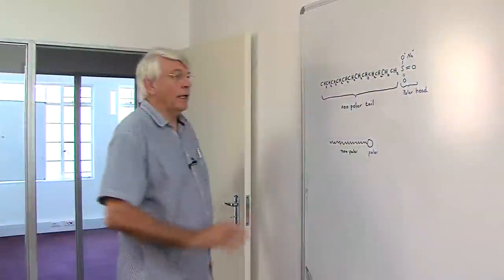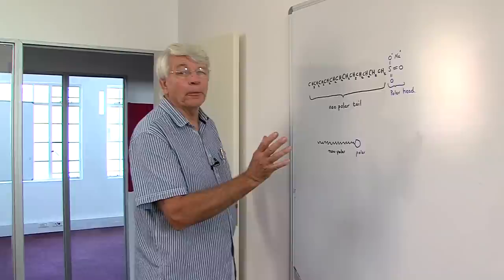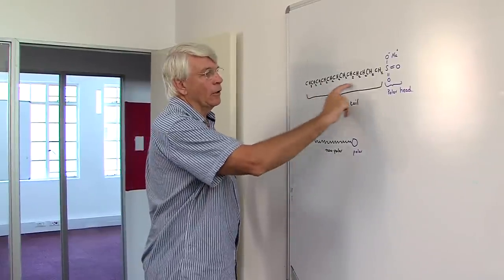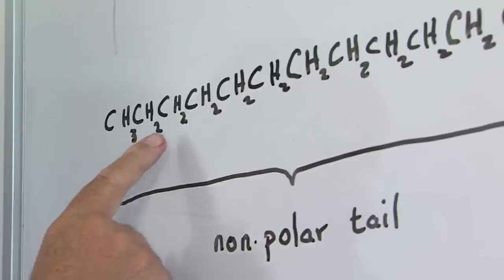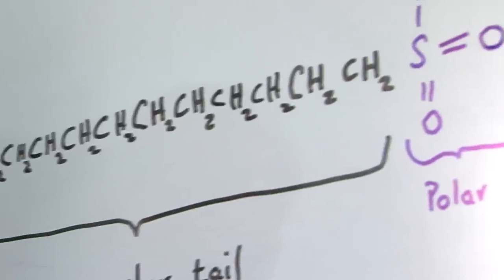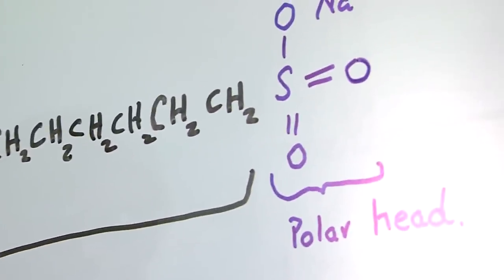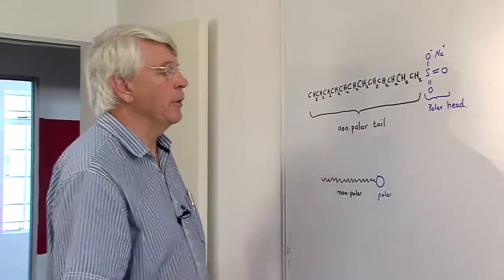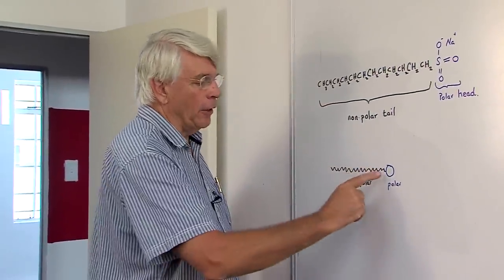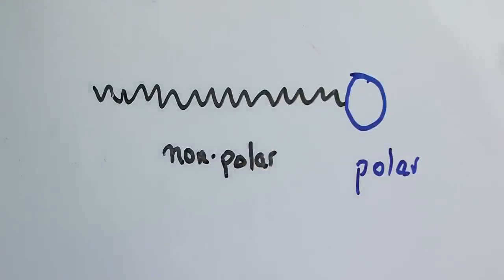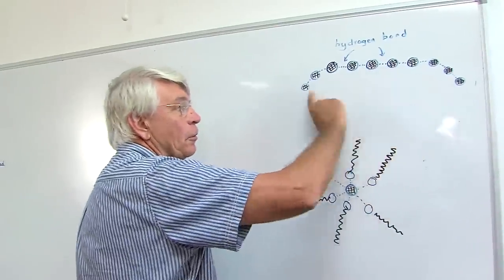The typical liquid soap molecule looks like this — this is lauryl sulfate. It's got a long non-polar carbon chain with 12 carbon atoms, and then it's got a polar head — the sulfate part, sodium sulfate. When you dissolve it in water, that sodium goes off, so essentially it's a non-polar tail with a polar head.